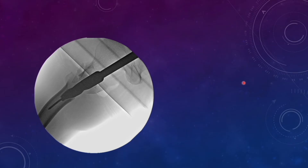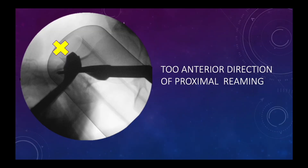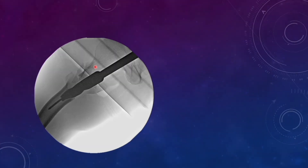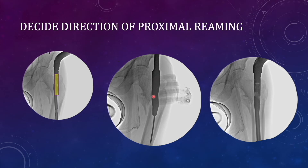Be cautious: whenever you are doing proximal reaming, always check the lateral view, because the proximal fragment has a tendency to deviate from reduction during reaming. Always check both AP and lateral views. Most commonly, the proximal fragment tends to remain in flexion during proximal reaming — so always confirm flexion is corrected before and during proximal reaming. We planned the desired track and performed proximal reaming in that specific direction, which prepared the area for nail insertion, and the nail aligned in that direction to achieve good alignment.